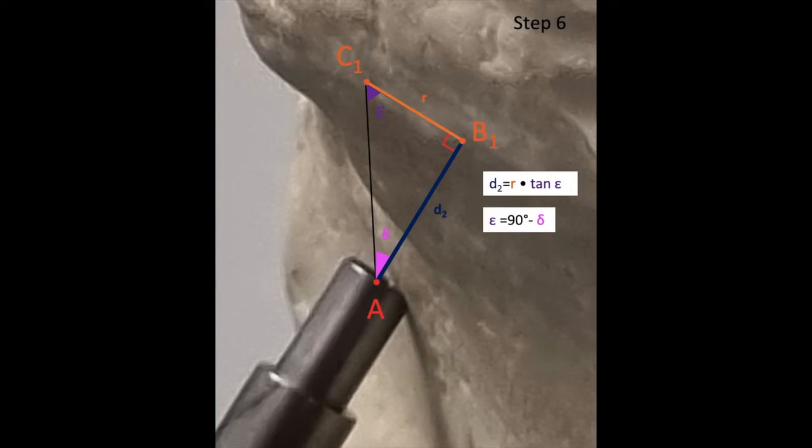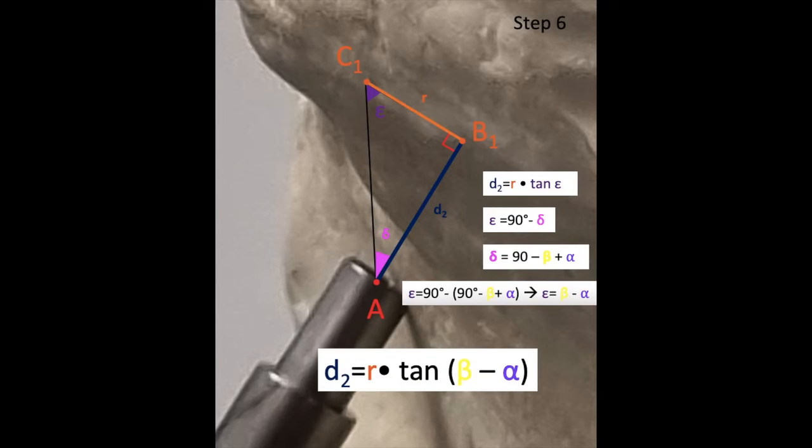Because this is a right triangle, epsilon is equal to 90 degrees minus the delta angle. We've previously solved for the delta angle in step 5, so we can substitute this into the formula above to calculate for epsilon. Substituting epsilon into the first equation yields our equation for D2, which is equal to r times the tangent of beta angle minus alpha angle.